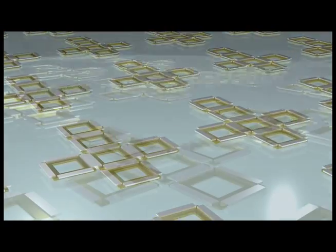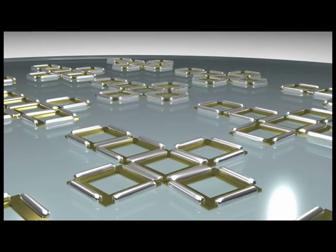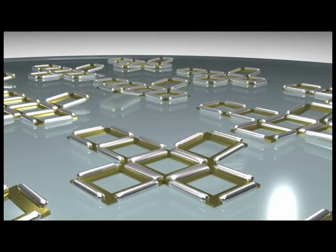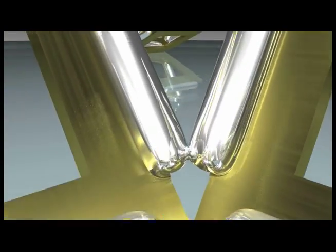they are heated until the hinges begin to melt. As the hinges melt, they ball up in order to minimize their surface area, and since they are attached to the square faces, this brings the faces together and eventually forms a cube.